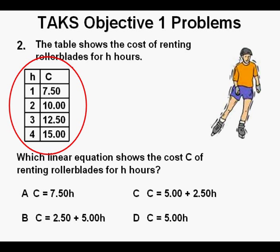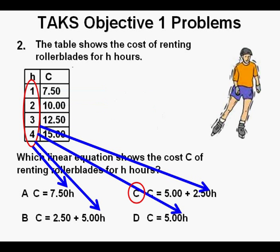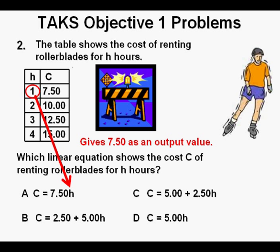So here you have a table that shows the cost for renting rollerblades by the hour and you are asked to choose the linear equation that best represents the table. The table shows the cost of one, two, three, and four hour rentals. By simply replacing h in each equation with one, two, three, and four, we find that only answer choice C yields the answers that match the cost column.